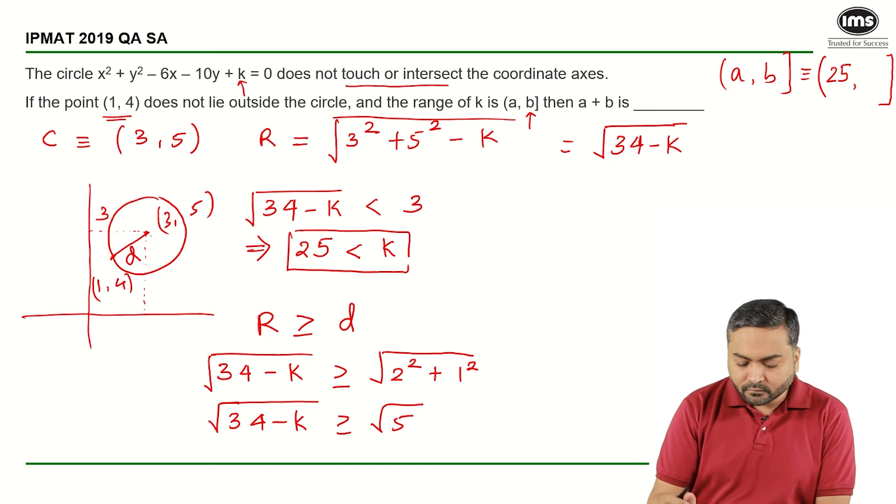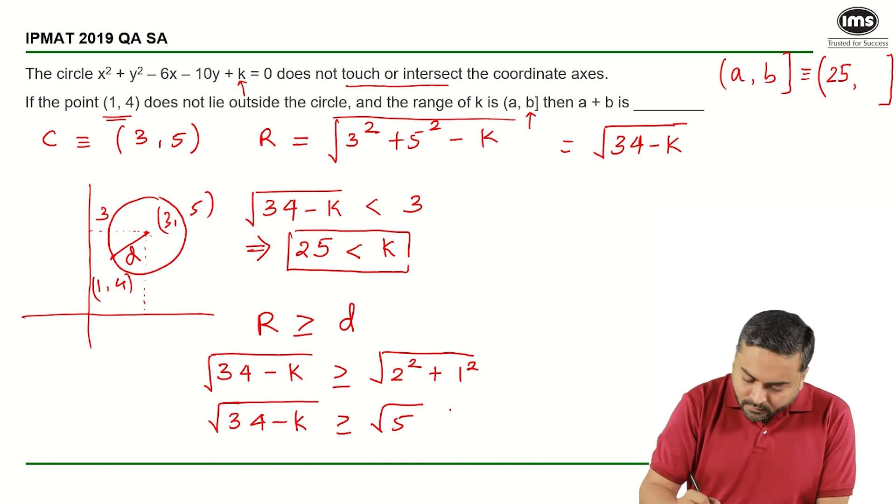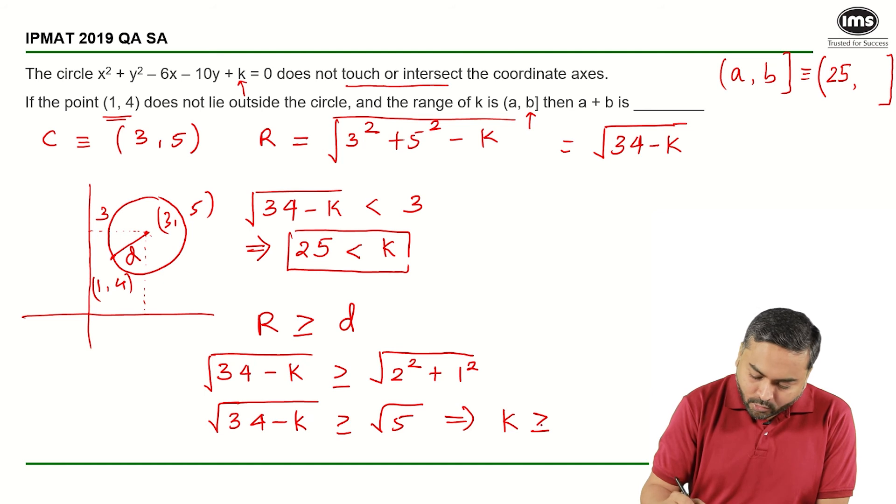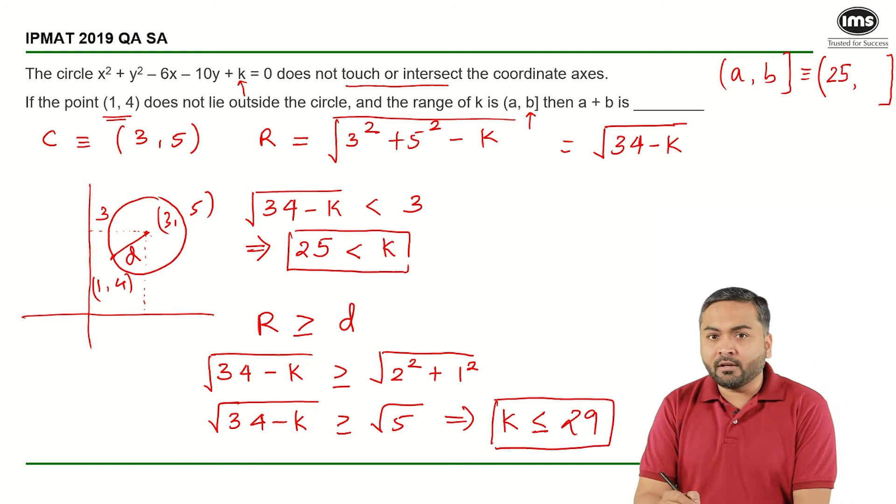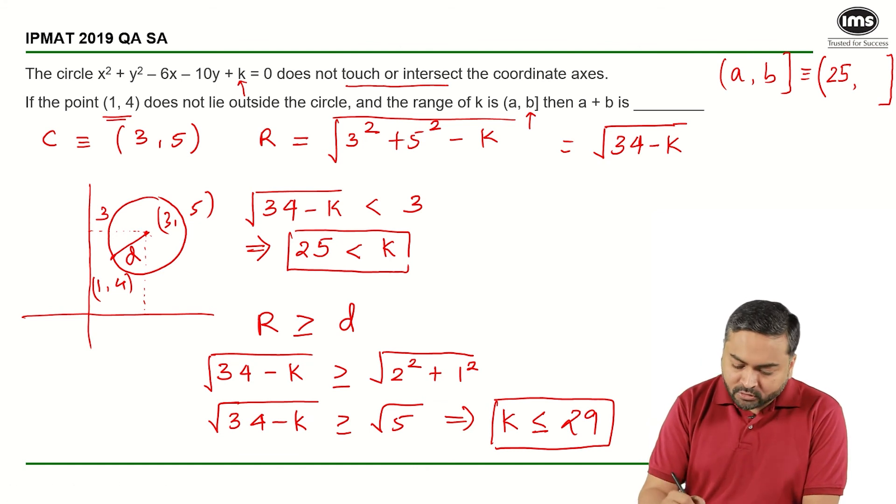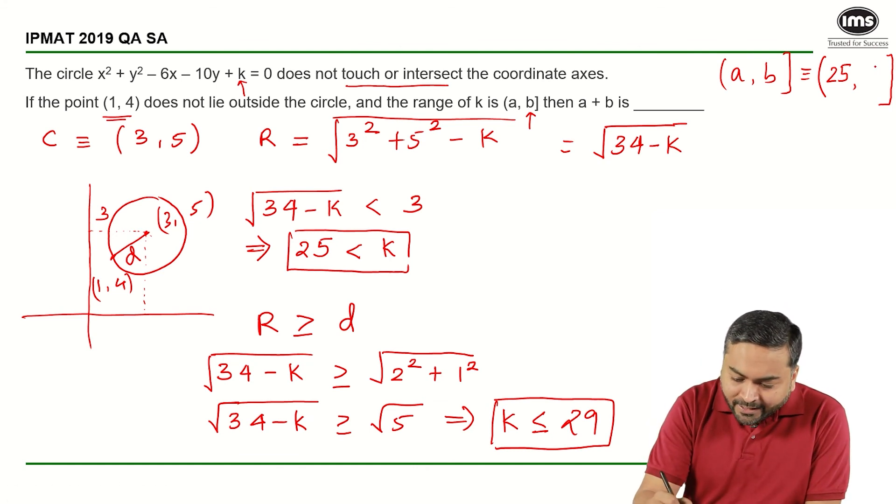If I square both sides, I will get k is greater than or equal to, not greater than, k will be less than or equal to. If I take that on the other side, it will become k less than or equal to 29. So this gives me confidence that I have got it right because I am getting the equal to sign here. So the upper limit for k is 29.